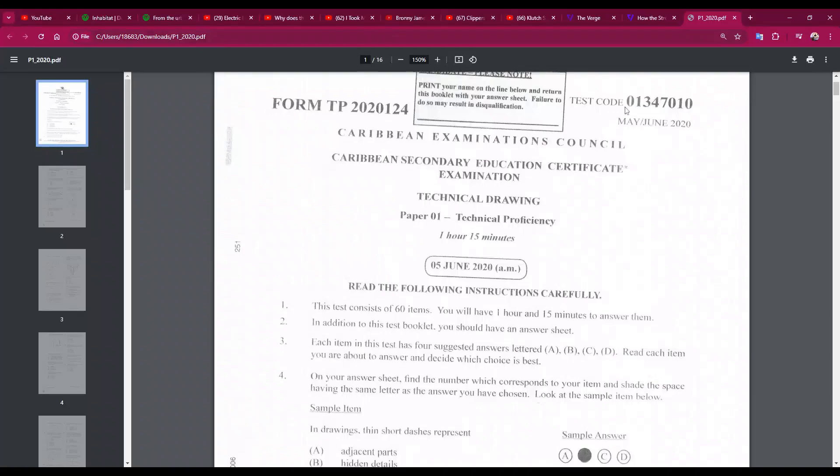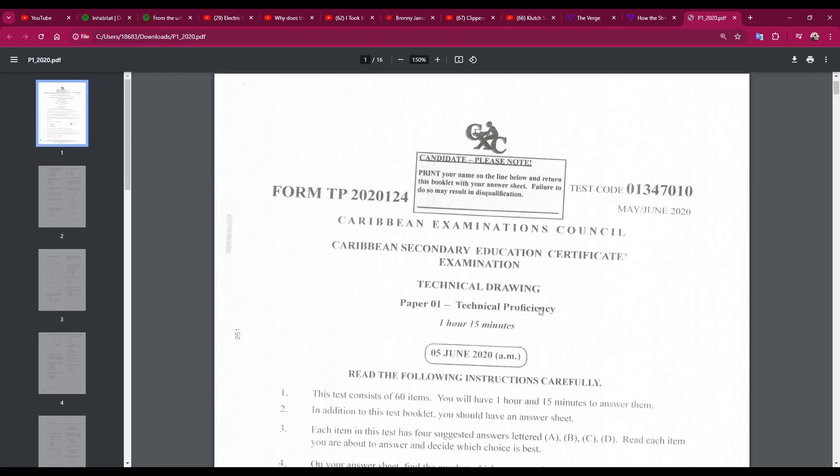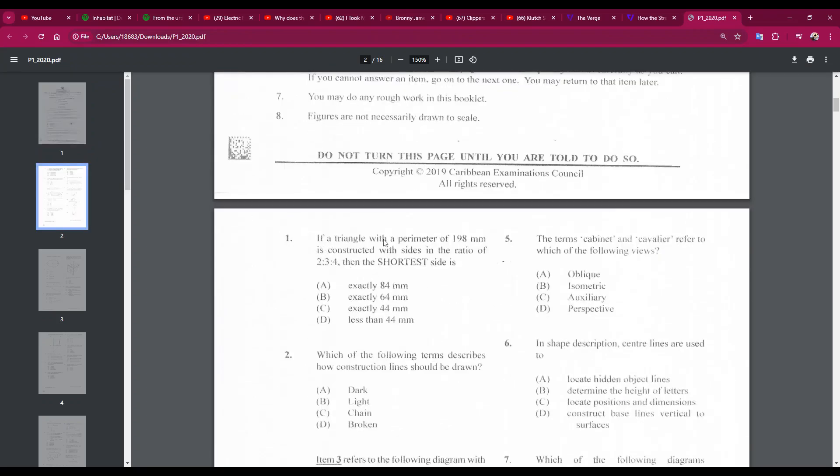Hey guys, welcome back to our past paper series. As you can see, we have May June 2020 Technical Drawing Paper One. So let's get into it. Number one: if a triangle with a parameter of 198 millimeters is constructed with sides in the ratio of two to three to four, then the shortest side is...